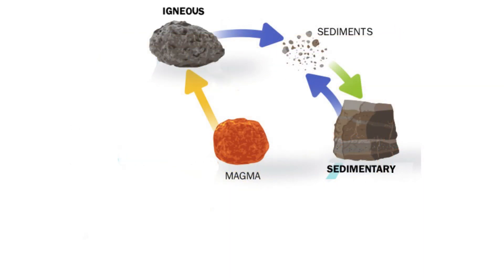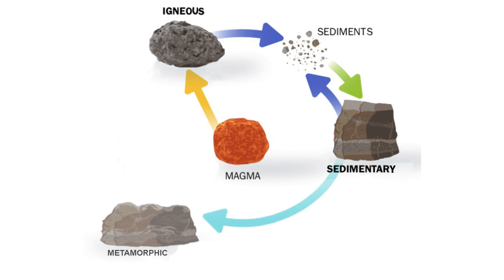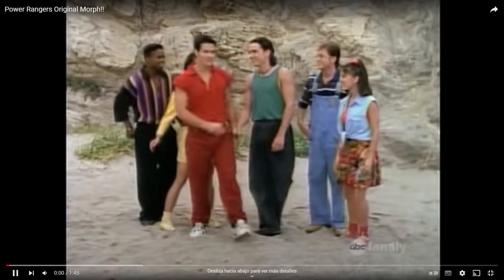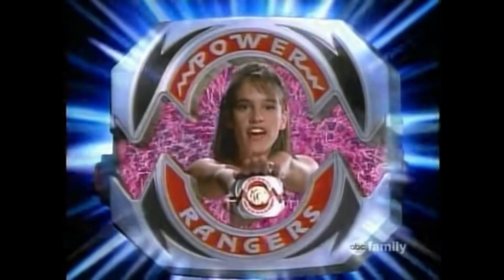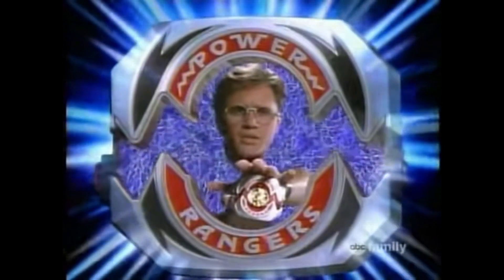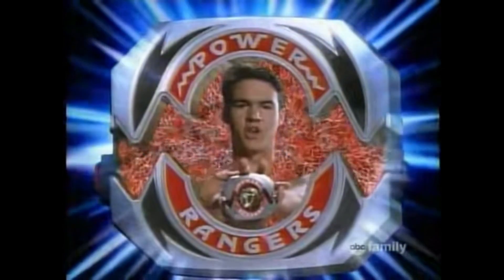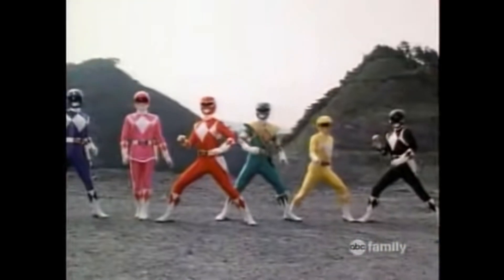Metamorphism comes from two Greek terms: meta, meaning change, and morph, meaning shape. So these rocks change their properties and turn into new rocks — just like the morphing from the 90s. It's morphin' time!